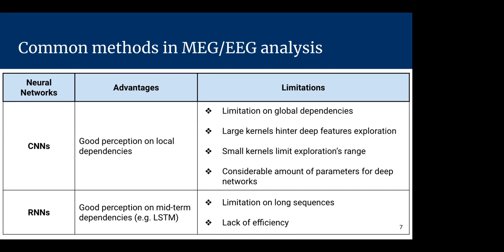When it comes to recurrent neural networks, they are limited for long sequences, which is often the case for EEG and MEG signals that can span several seconds. Moreover, they lack efficiency because we cannot parallelize steps in recurrent neural networks.